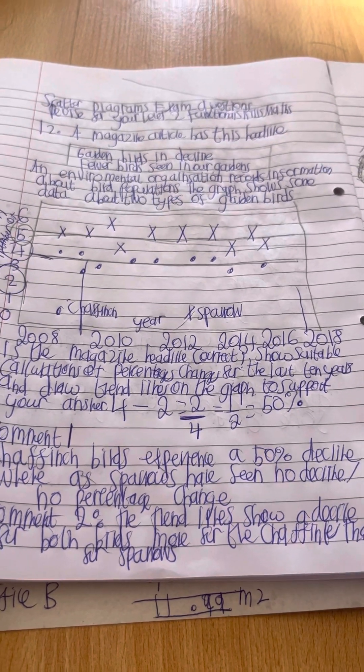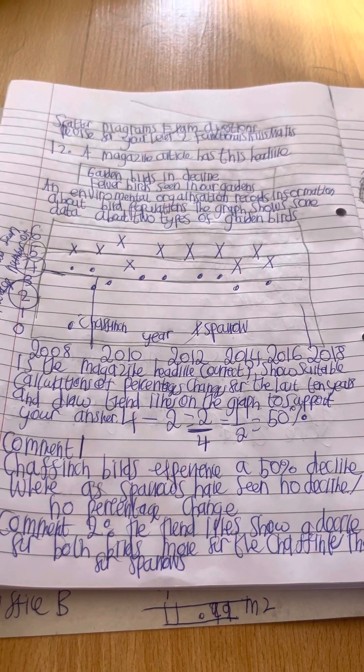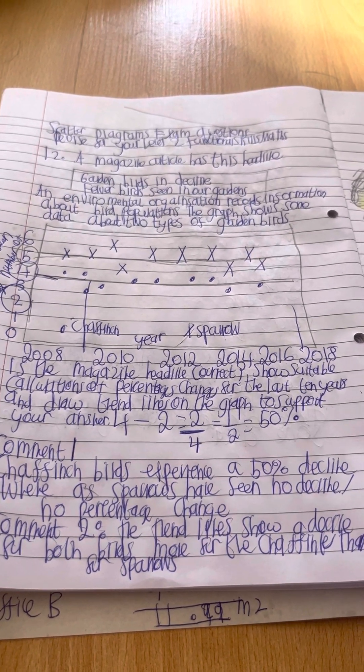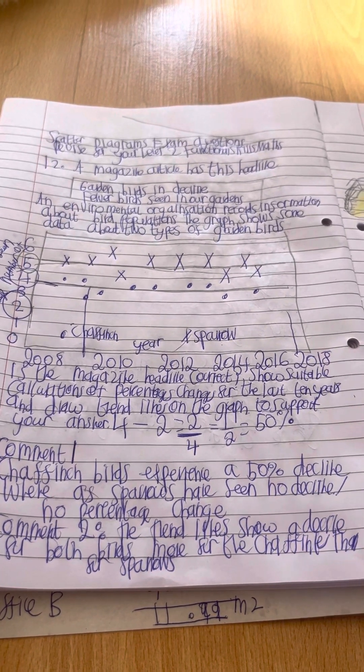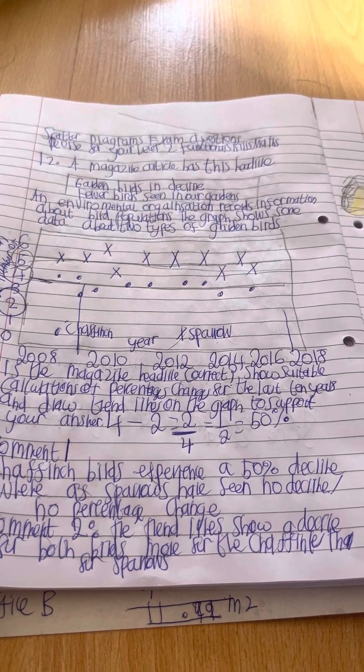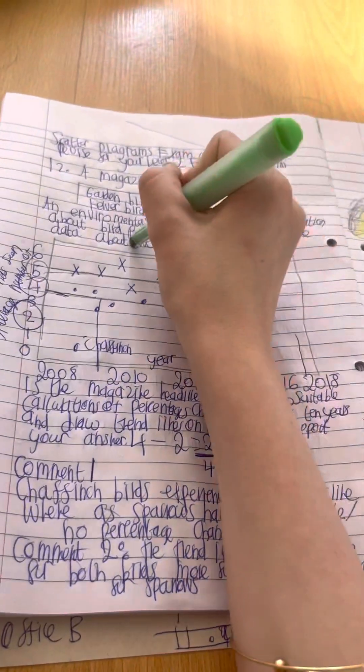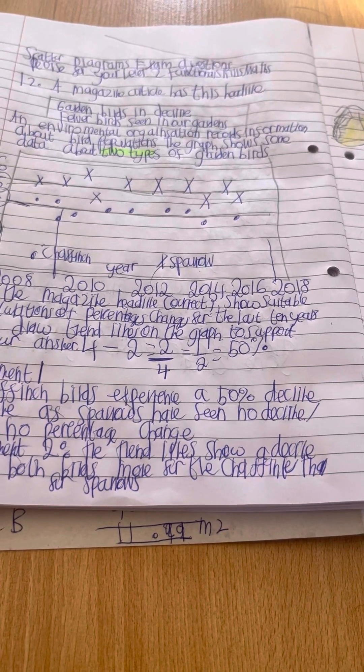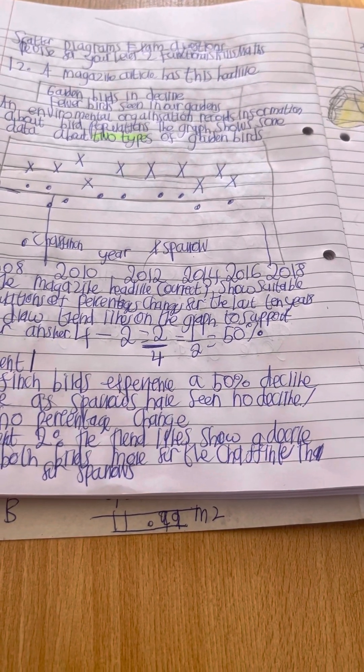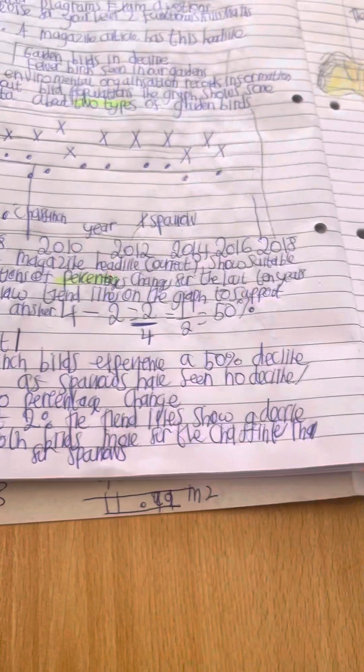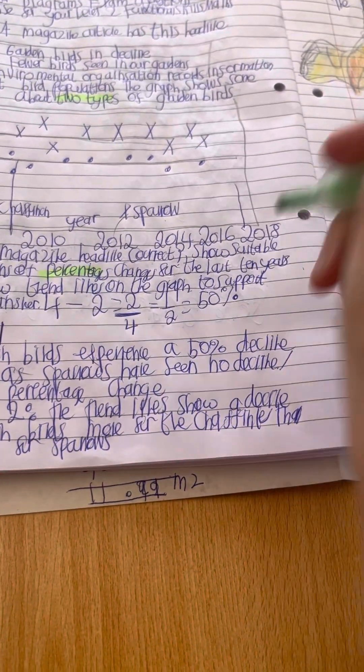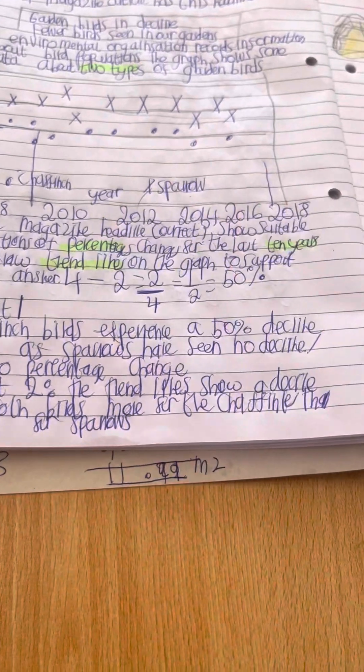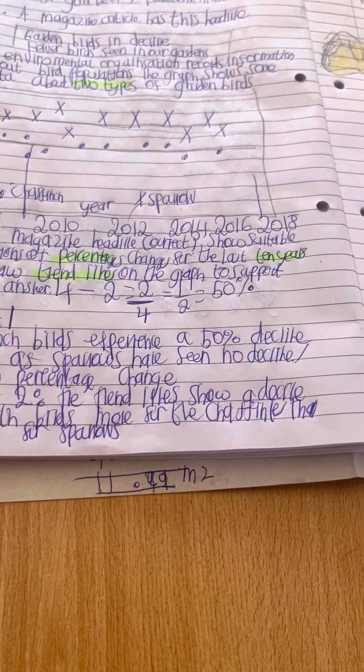A magazine article has this headline: Garden birds in decline. Fewer birds seen in our gardens. Environmental organisation records information about bird populations. The graph shows some data about two types of garden birds. Is the magazine headline correct? Show suitable calculations of percentages, changes for the last 10 years, and draw trend lines on the graph to support your answer.